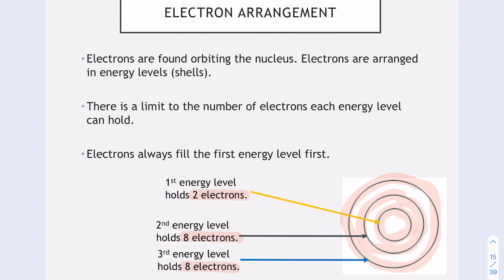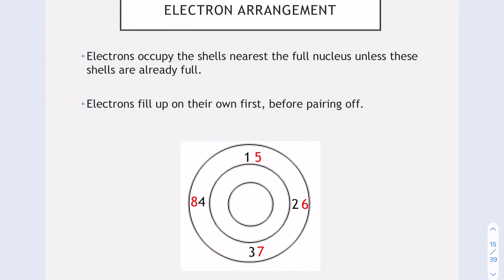Electrons like to fill up on their own first before they pair off. If you imagine we've got a little diagram here with four seats on the bus. Most people tend to sit on their own before they have to sit next to someone else. Electrons are the same. They fill individually first, then pair off.